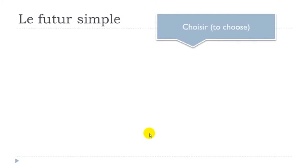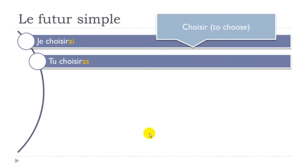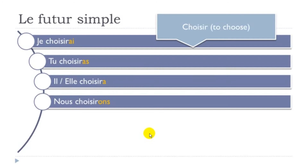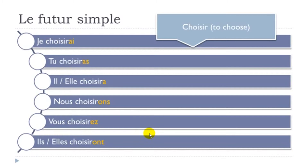Now 'choisir', to choose — second group of verbs: je choisirai, tu choisiras, il choisira, elle choisira, nous choisirons, vous choisirez, ils choisiront, elles choisiront. Same thing — just keep the infinitive form and put your endings at the end.